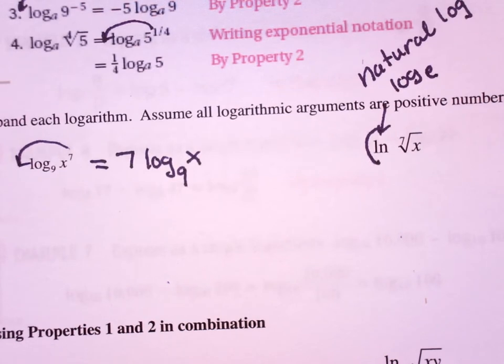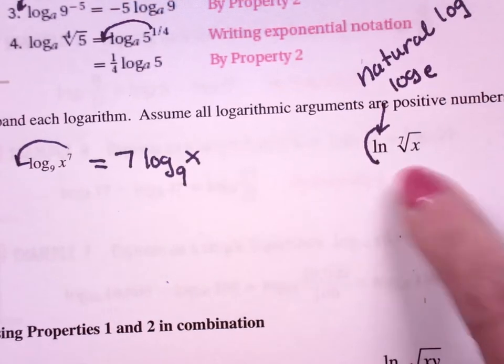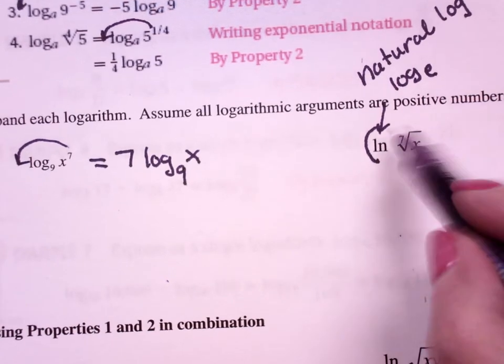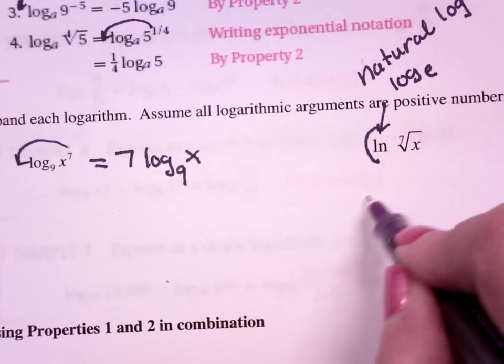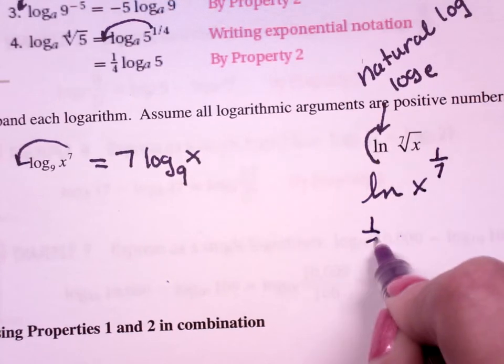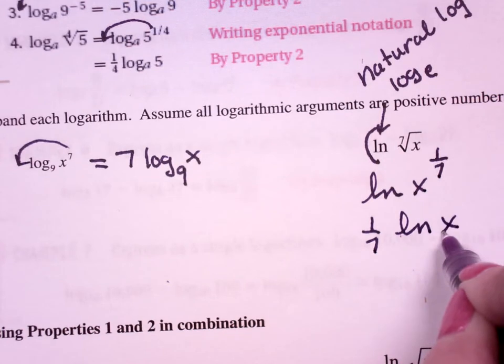So I should have changed the logs on these two, so it was my bad. But it is, it's a log base e. So treat it as just any other log. So natural log of x to the 1/7 turns into 1/7 natural log of x.